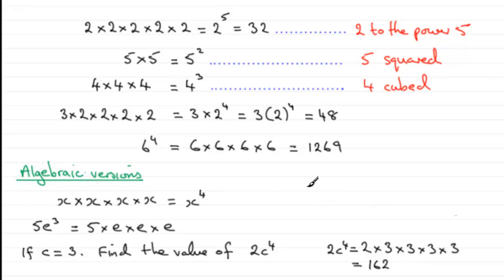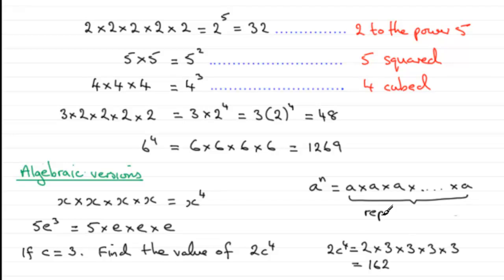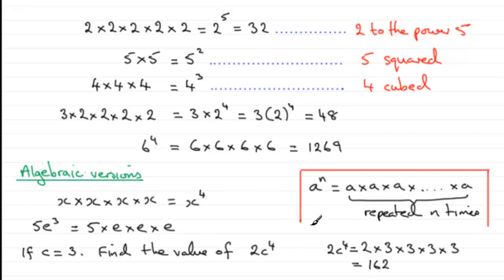In summary, if you've got a number or letter a to the power n, then this is short for saying a multiplied by a multiplied by a, repeated n times over — the multiplication is repeated n times. This is a result to try and remember, and in other tutorials we'll be exploring this further. I hope that's given you an idea on indices, or as some people call them, exponents.